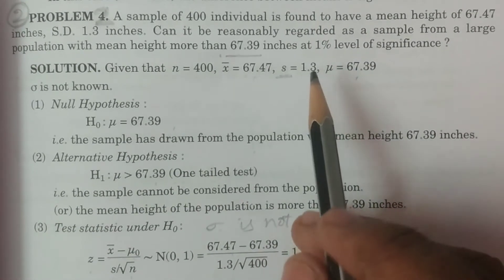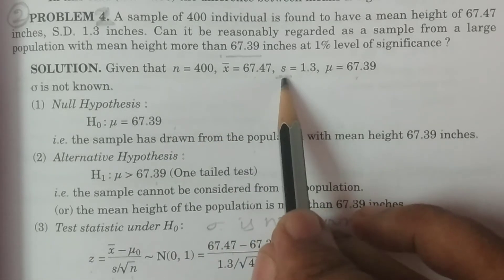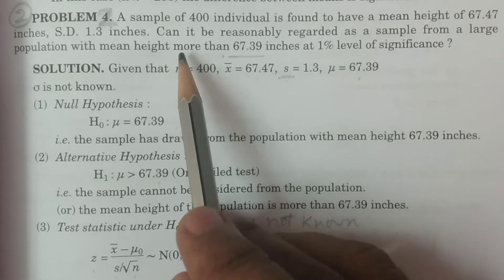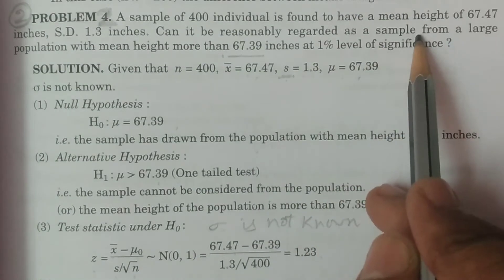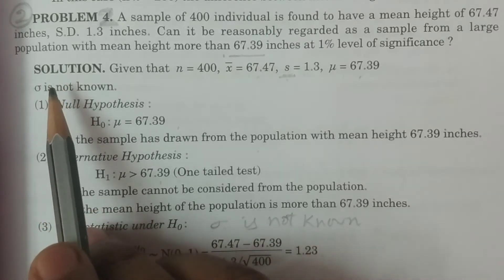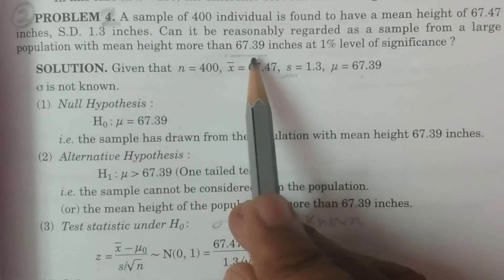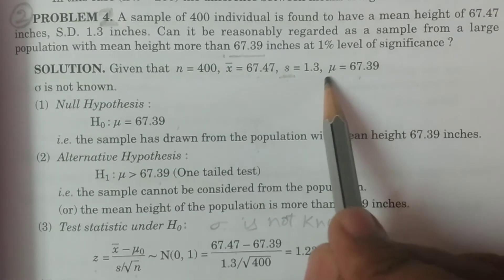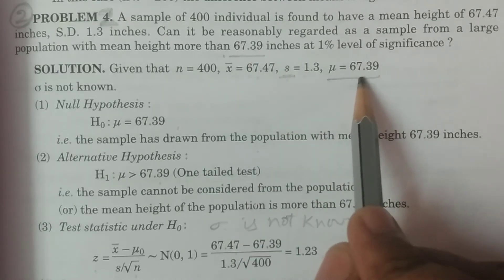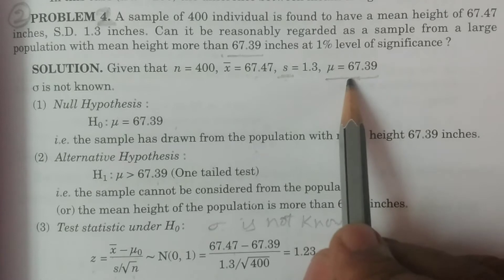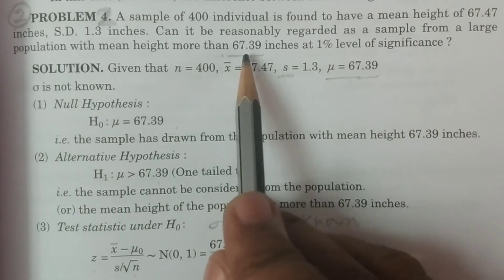Now we have the data: N, X-bar, and S. This is a mean test. Can it be reasonably regarded as a sample from a large population with mean height more than 67.39 inches? The mean height of the population is equal to 67.39 inches, so mu is equal to 67.39 inches.